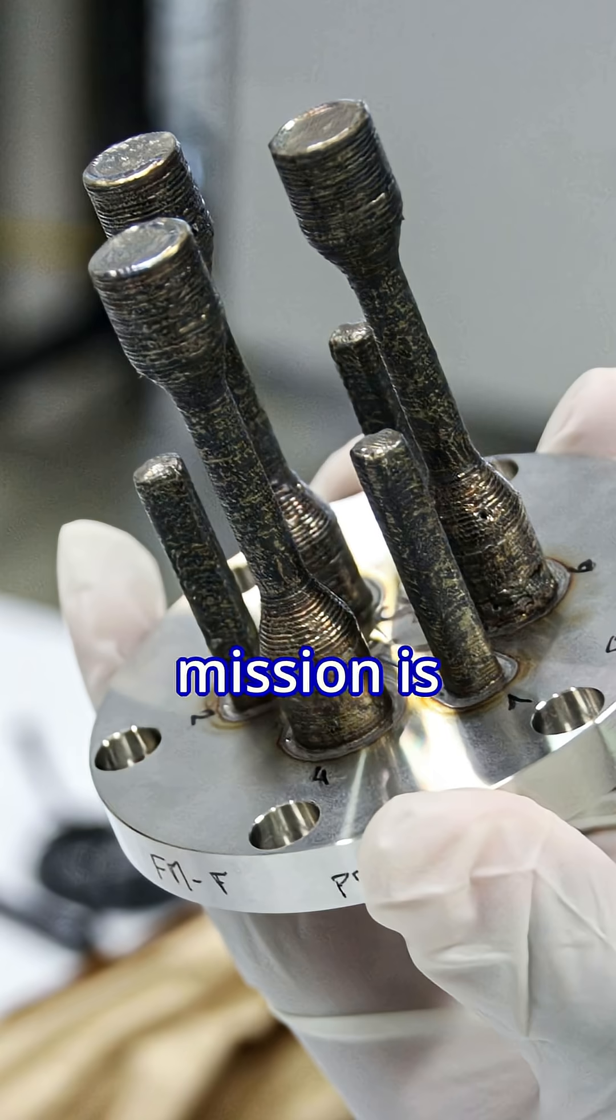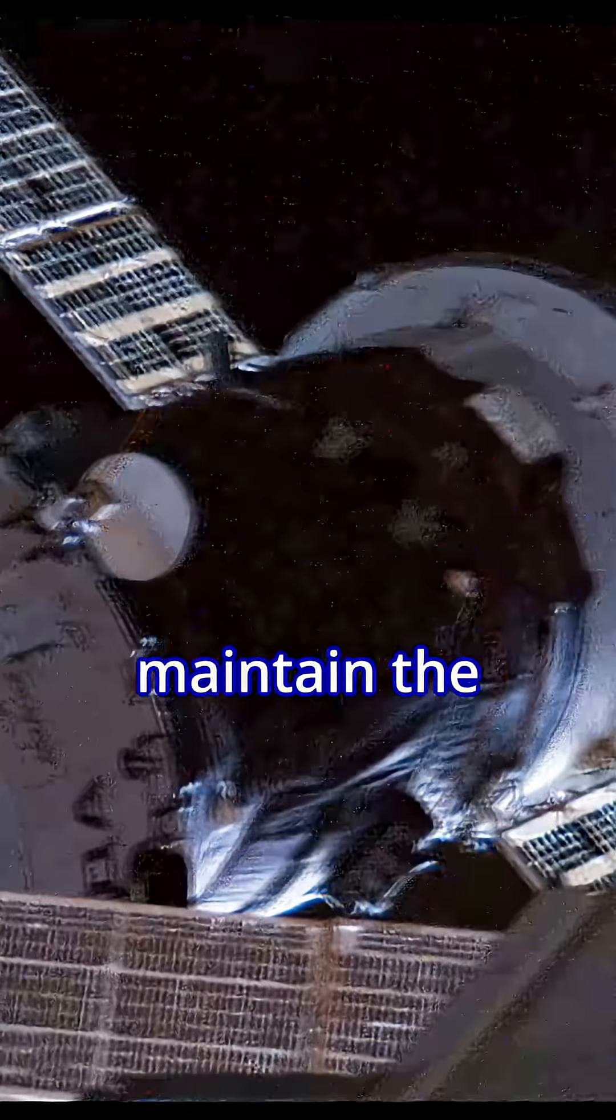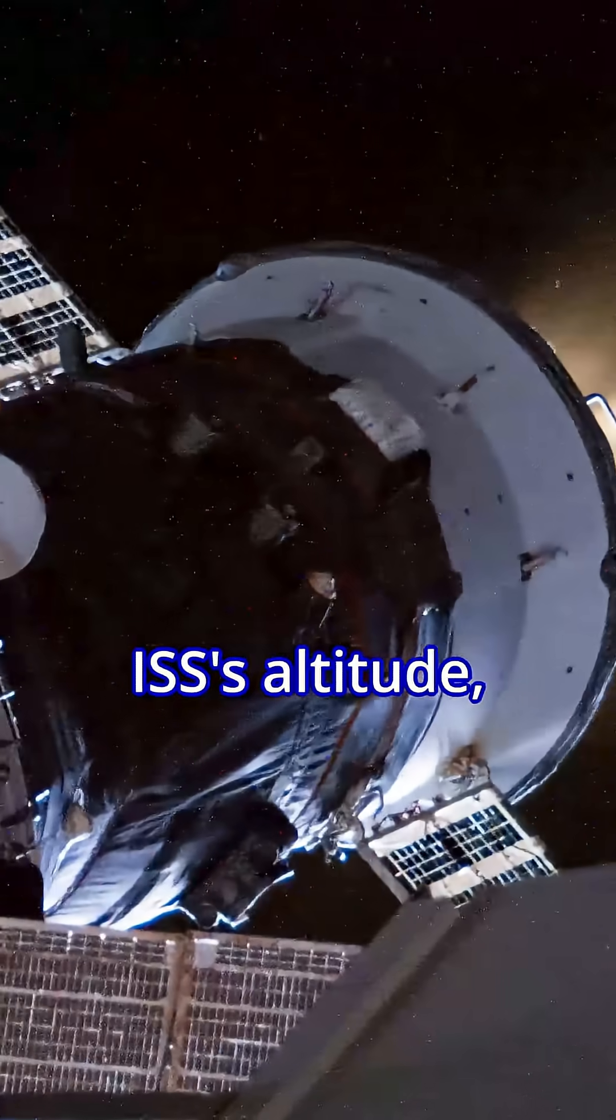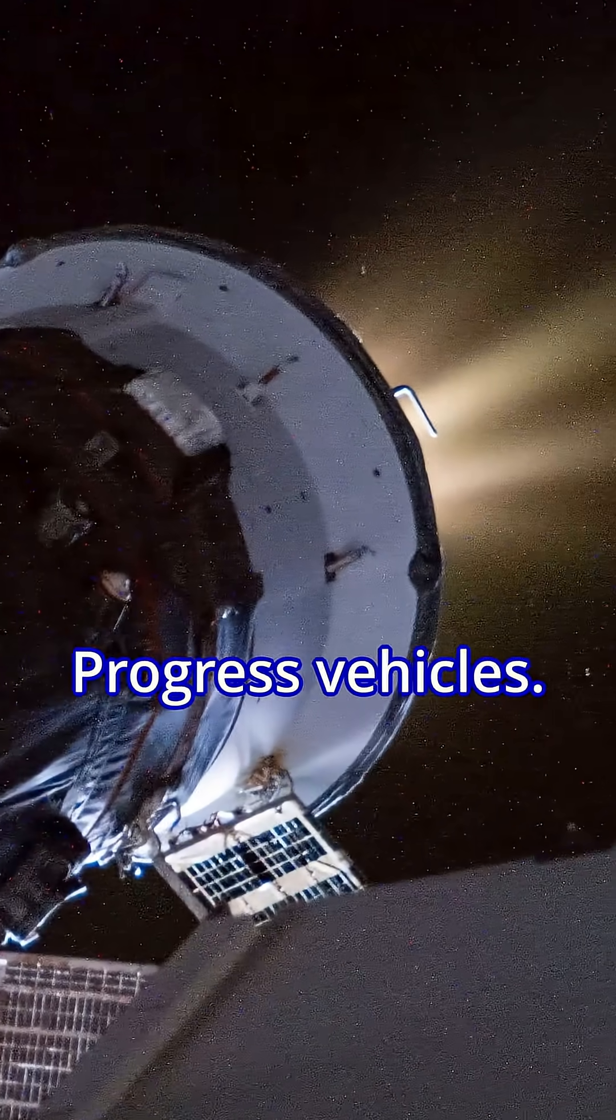Of particular note for this mission is a new boost kit installed in the Dragon's trunk designed to help maintain the ISS's altitude, a task traditionally performed by Russian Progress vehicles.